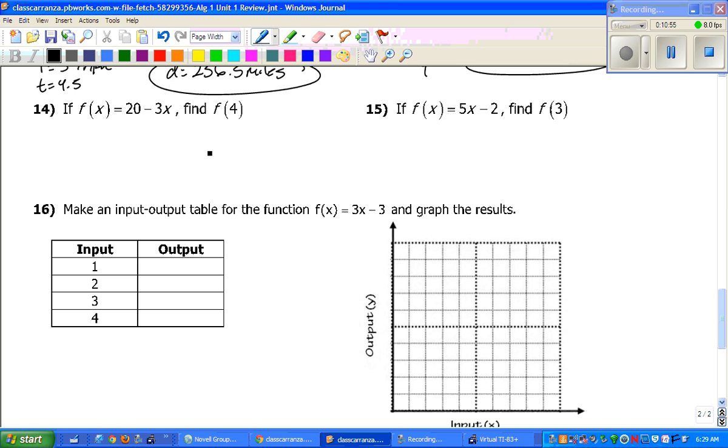14 and 15, we're working on function notation. In both of those, it tells you what to plug in. So, all you've got to do is plug in the number. You want to know 4. Order of operations. 3 times 4 is 12. And then you get 8. Once again, function notation. Plug in. 5 times 3 gives you 15. 15 minus 2 is 13.